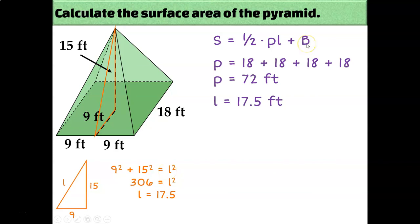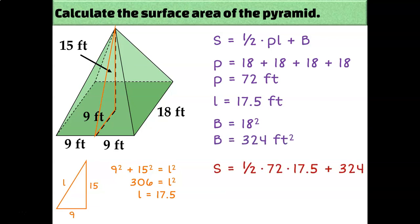The last piece I need is B, the area of the base. Since the base is a square, that's easy: side length squared, and 18 squared is 324 square feet. Now that I know P, L, and B, I can plug each of those numbers into my formula and use the calculator to get an answer of 954 square feet.